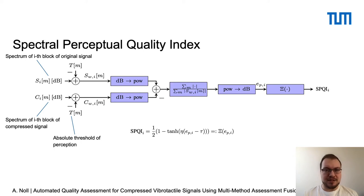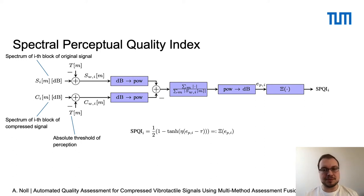These perceptually weighted spectra are subtracted from each other and averaged over all samples. With this, we get EP, which is a perceptual error measure between the different signal blocks. By mapping that error measure to a range between 0 and 1 with a Xi function, we can get a score in terms of percent.